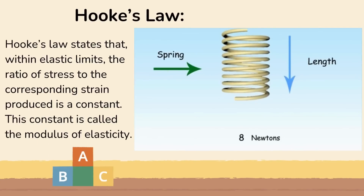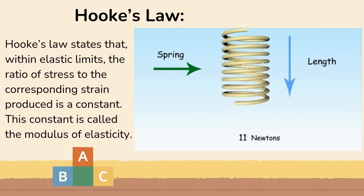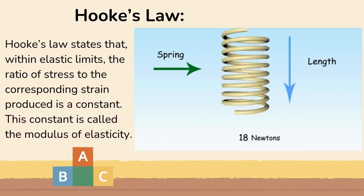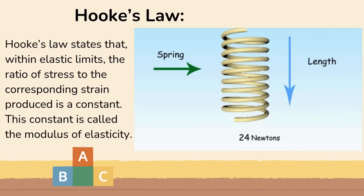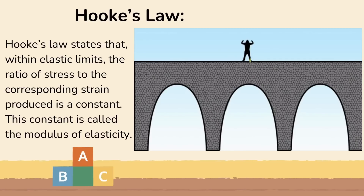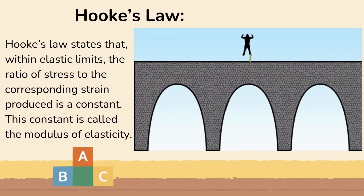Hooke's law basically tells us how far an elastic material will stretch depending on the tension or force applied to it. It is a common law used in physics and engineering. Have you ever wanted to go bungee jumping? How reassured would you feel that the rope attached to your feet would not stretch too far, causing you to hit the ground at 100 km per hour? After the cord passes the point of free fall, it acts as a spring and so falls under the rules of Hooke's law.